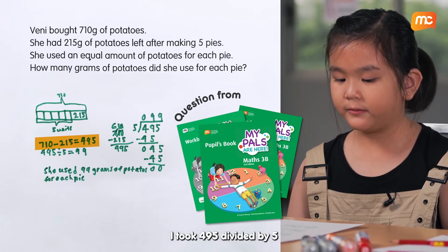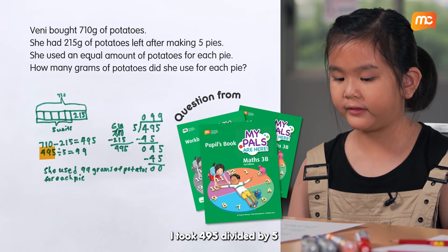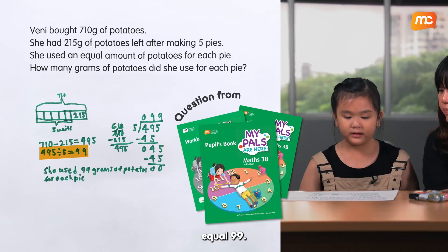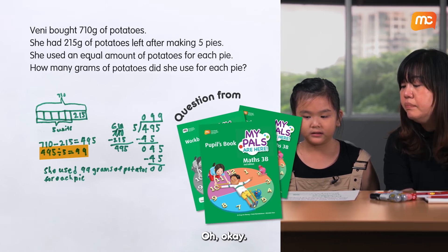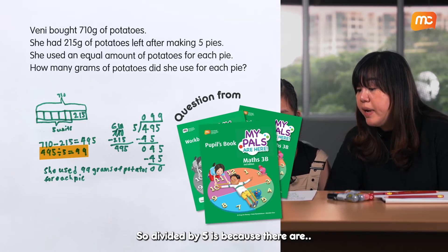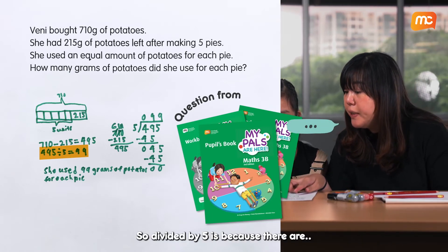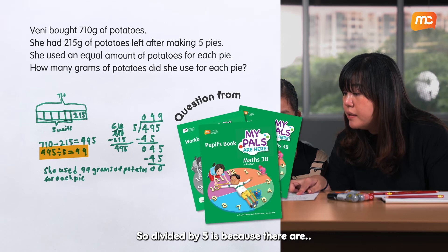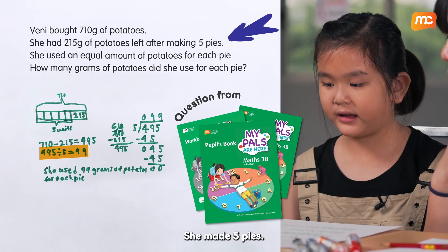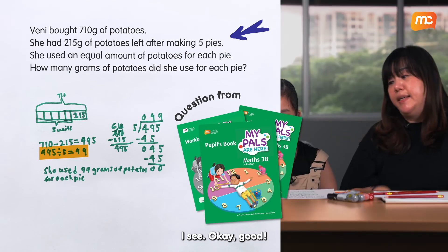I took 495 divided by 5 equals 99. Okay. So divide by 5 is because there are... She made 5 pies. I see.